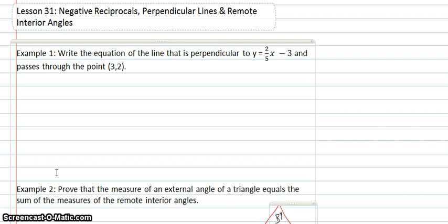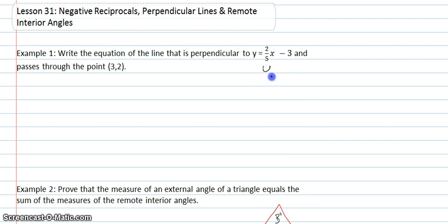When lines are perpendicular, the relationship of their slope is the negative reciprocal. So, I know that the slope of the other line will be negative 5 over 2, but I'll still have to find out the y-intercept.